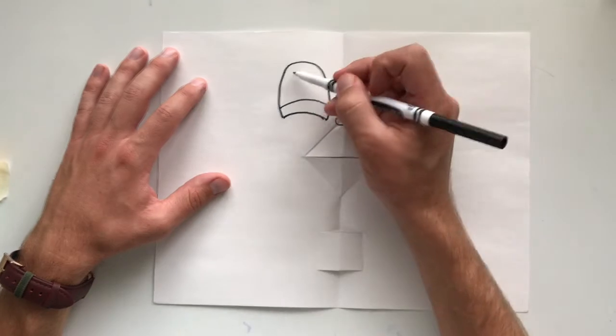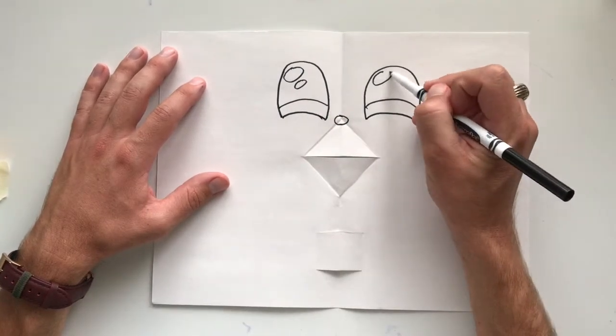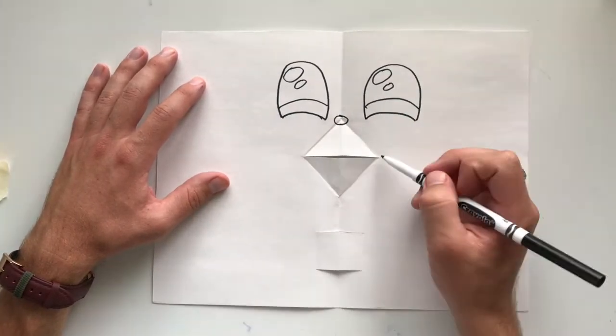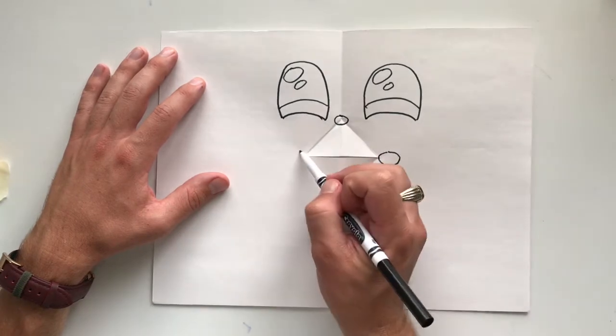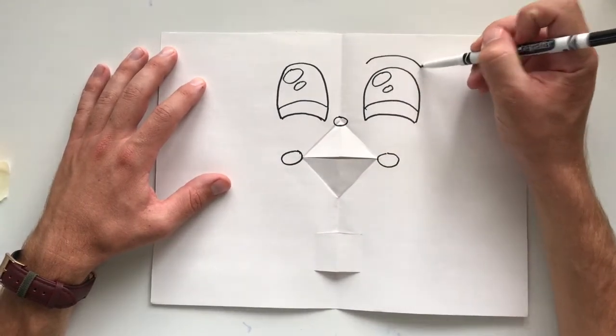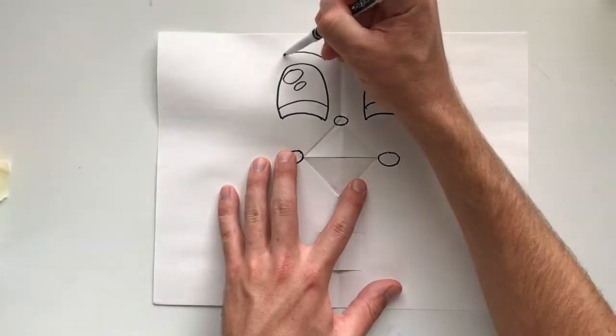Now we have the bottom eyelid and two ovals in each eye to show the really glossy, shiny eyes that he has. If you want to make it a little bit more cartoony, you can add little cheeks.